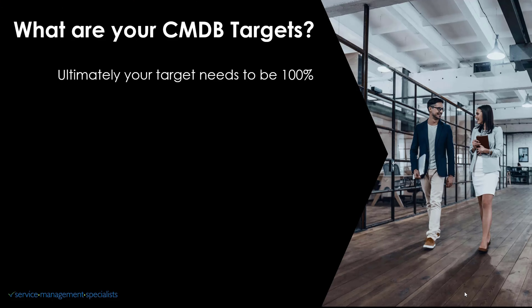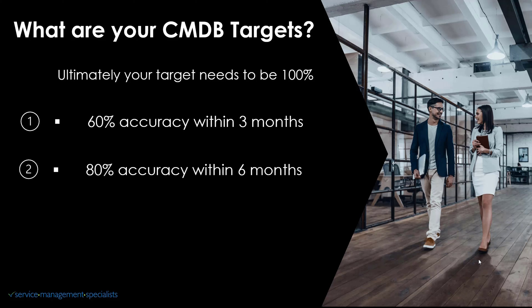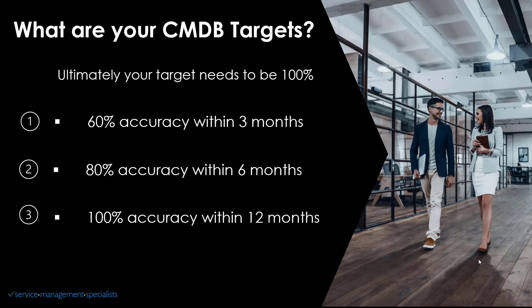So what are your CMDB targets? Ultimately you want to get to 100%, but it may take you some time to get there. So let's say you want to target 60% accuracy within three months, 80% within six months, and it's going to take you 12 months to get to 100%. You do ultimately want to get to 100% to ensure that you're getting the most value from your CMDB and that it's a valuable piece of software you're constantly using both in your operations and in your strategic planning as well.